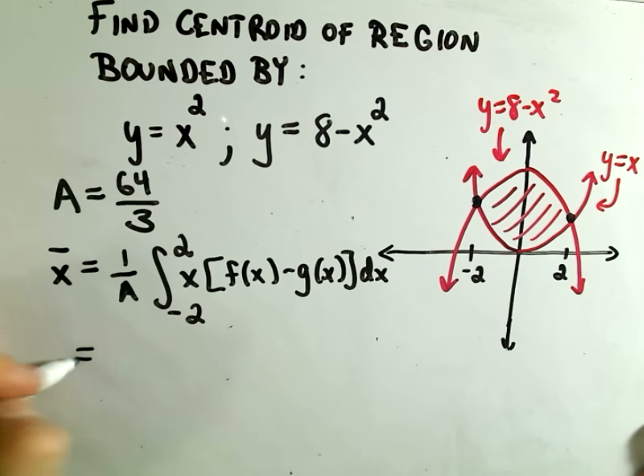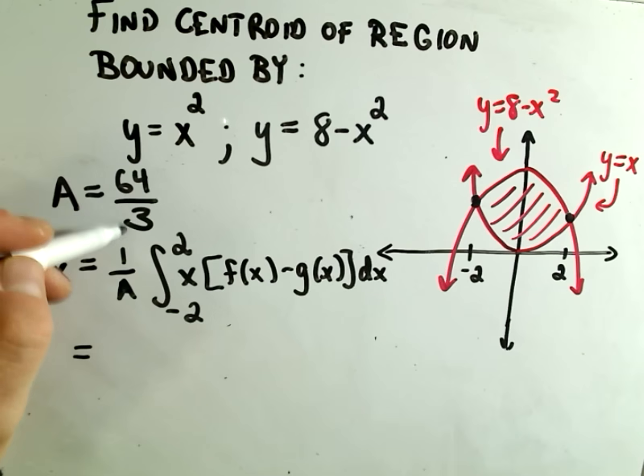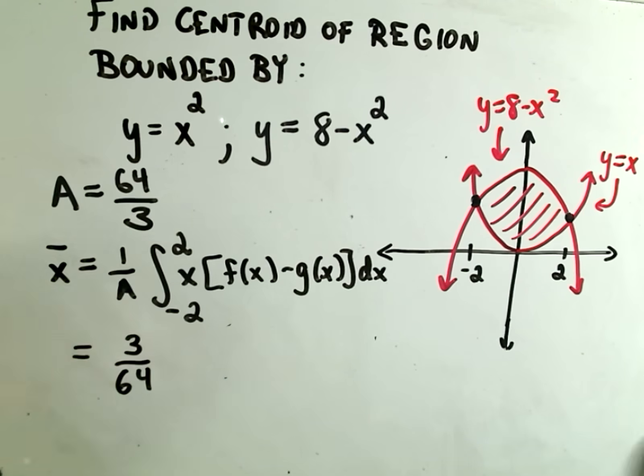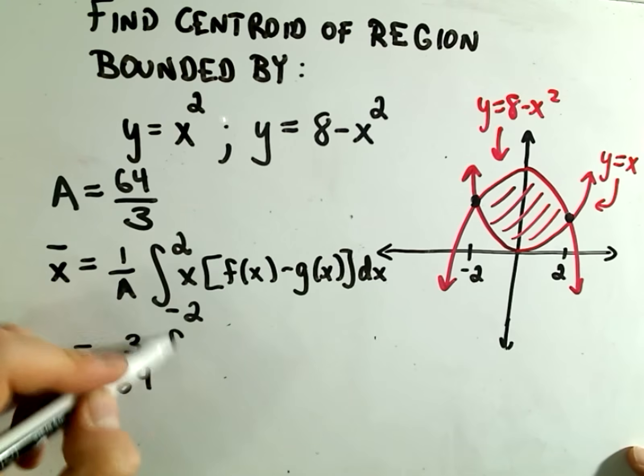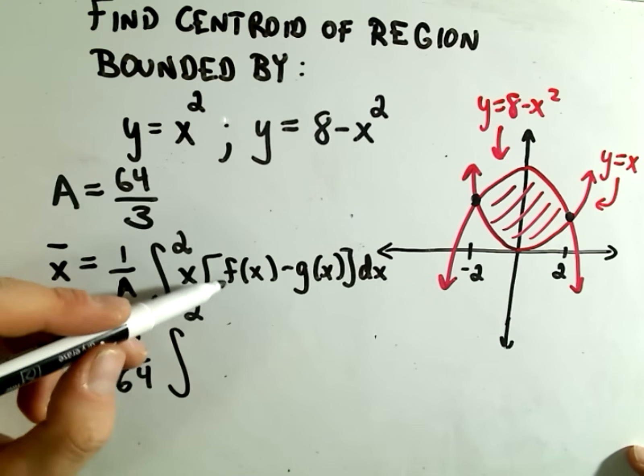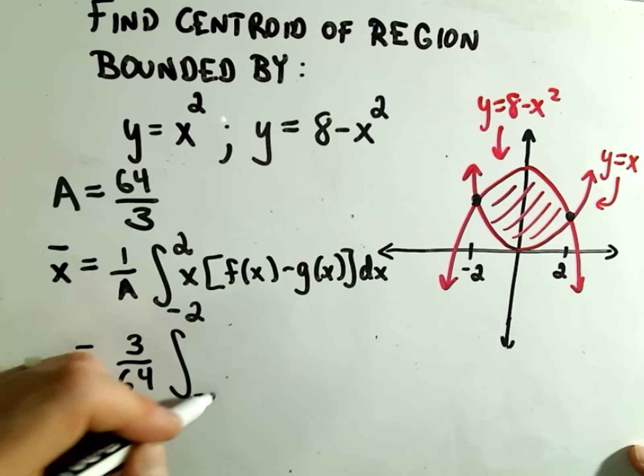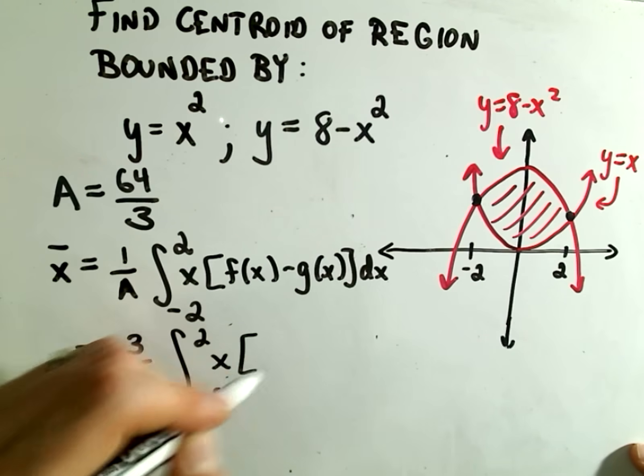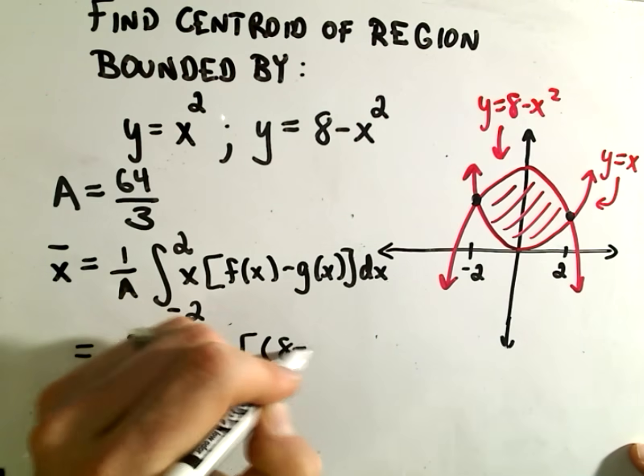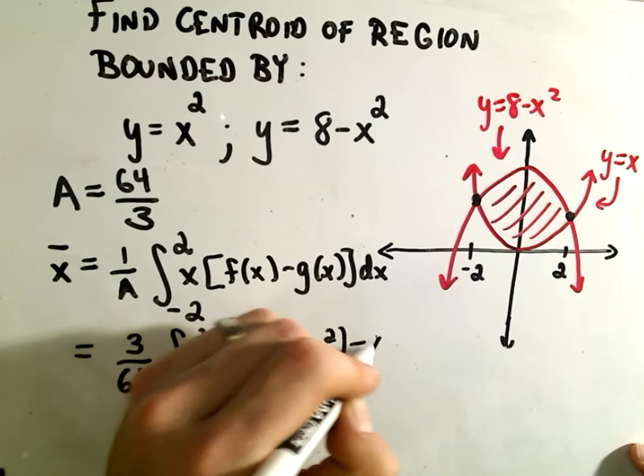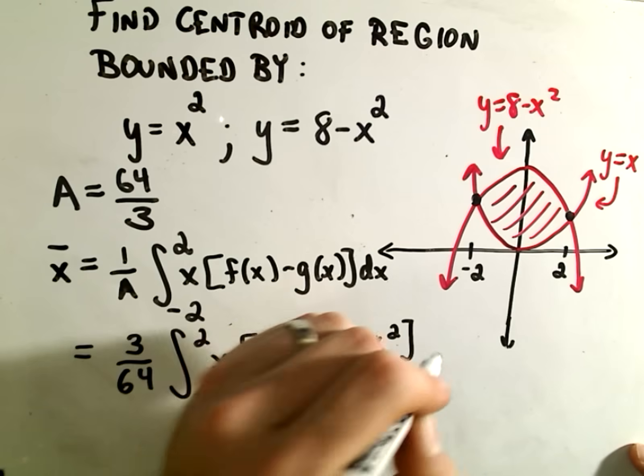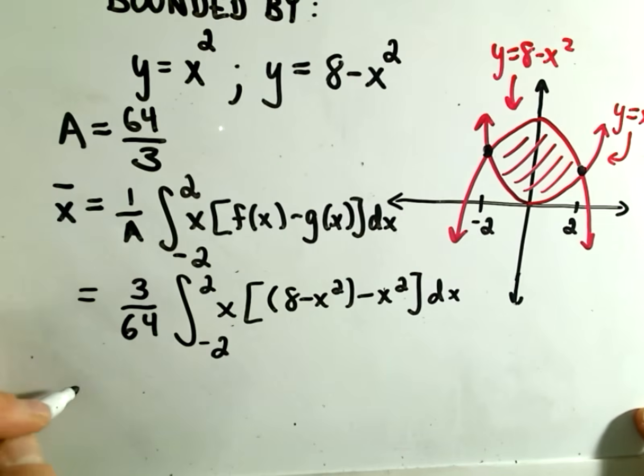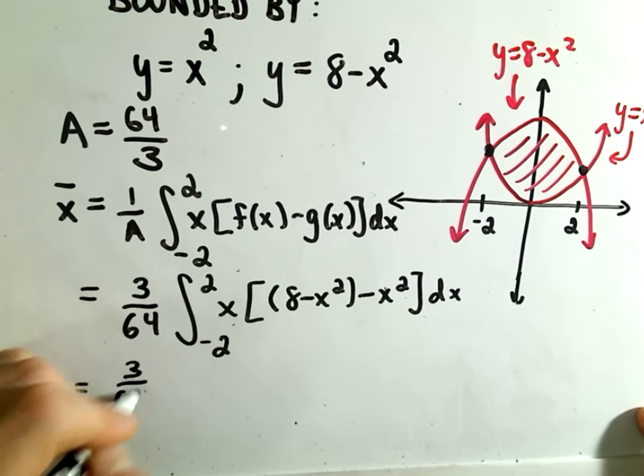So I've rewritten the x-bar formula. It says we'll take 1 over the area. That means we'll flip the fraction to get 3/64. Remember the formula here: it's x times the top function minus the bottom function. In our case, we'll have x times the top function, which is 8 - x², minus the bottom function, which is x², dx. Now we'll simplify this down and calculate this integral.